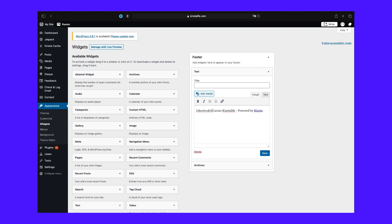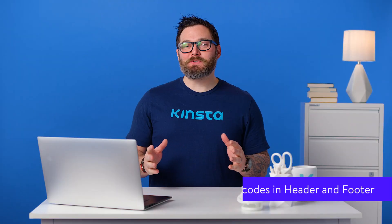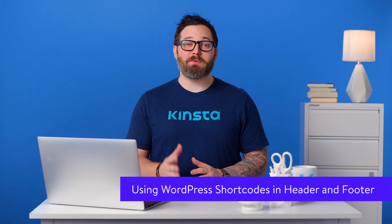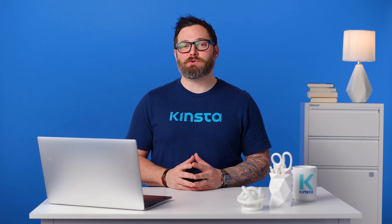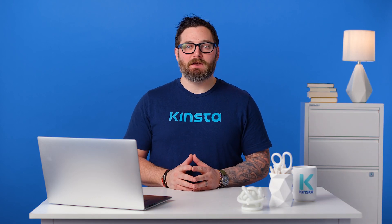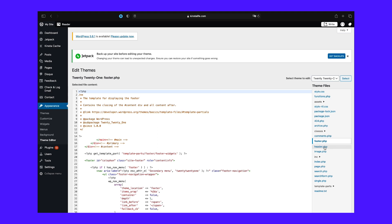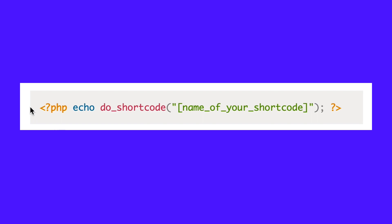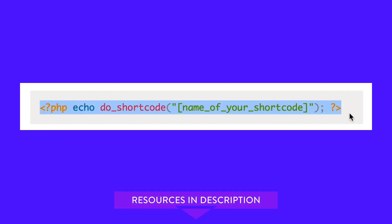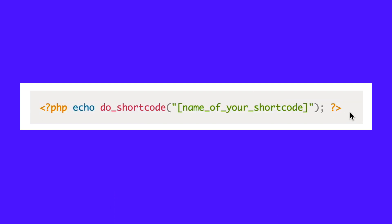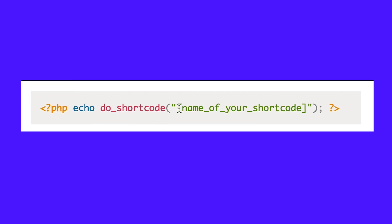WordPress shortcodes are generally meant for pages, posts, and widgets. But here's an easy way to insert shortcodes anywhere on your site. Say you want to add a call-to-action button in your footer or in all of your posts before the comments section — the do_shortcode callback function comes in handy here. You need to add the following code to your theme's header.php file, footer.php file, or any of its template files. This will output the shortcode in the place where you insert the code. You need to include the square brackets in between the quotation marks to echo the shortcode — just including its name won't work.